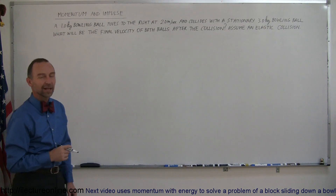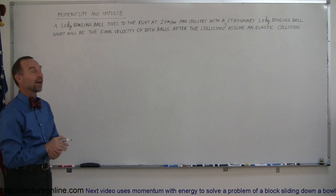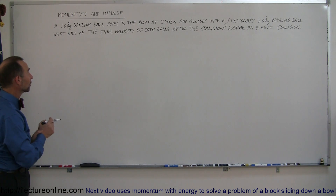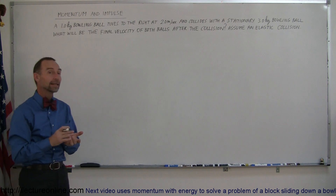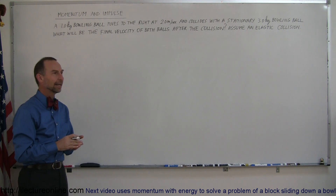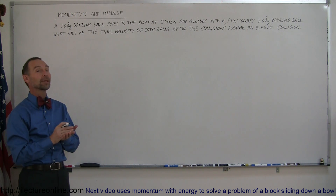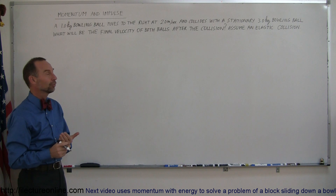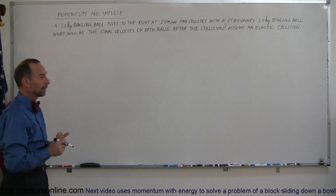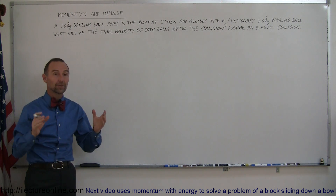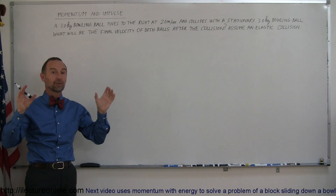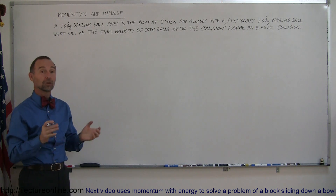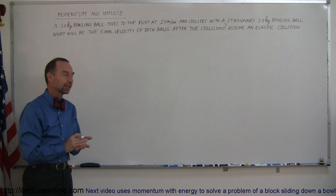Welcome to iLecture Online. Here's another example of how to do a problem dealing with momentum. Two things are colliding, and as we know about momentum, whenever two things collide, momentum is always conserved, which means that the momentum of the two objects before the collision always equals the sum of the momentum of the two objects after the collision.